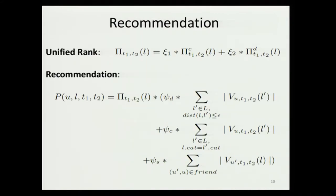After computing the categorical and spatial ranks, we use a unified model — a weighted linear combination of those two ranks. We then use the computed ranks to define the recommendation score for a user for a given location within a time frame. This score combines the popularity of the location in that time frame, the distance-based popularity of nearby locations, the popularity of locations in the same category, and the popularity of locations visited by the user's friends — covering spatial, categorical, social, and temporal aspects. The weights for these terms are defined using TF-IDF.